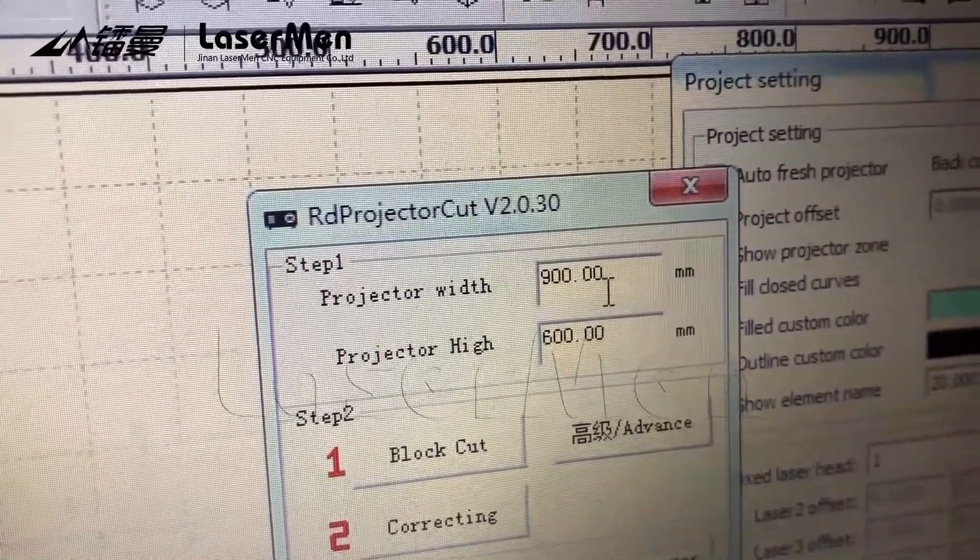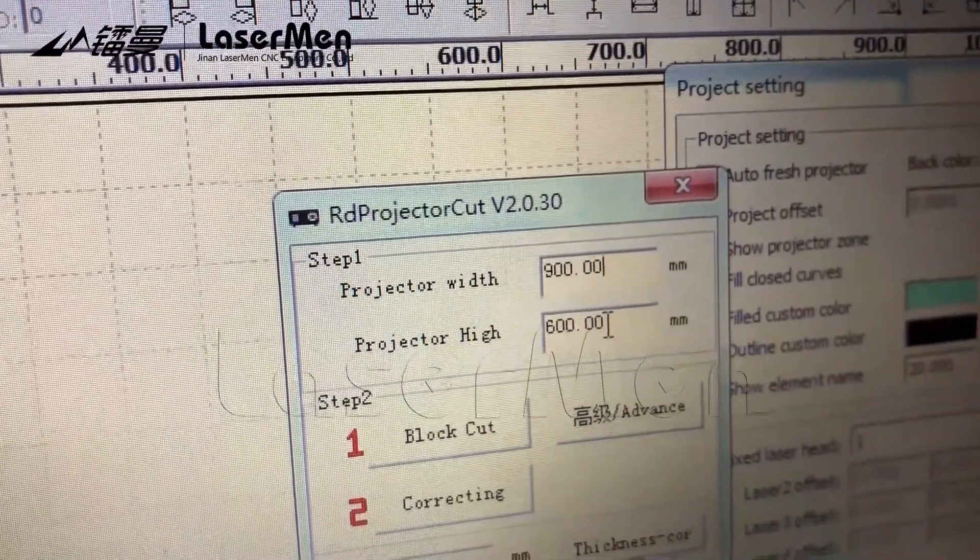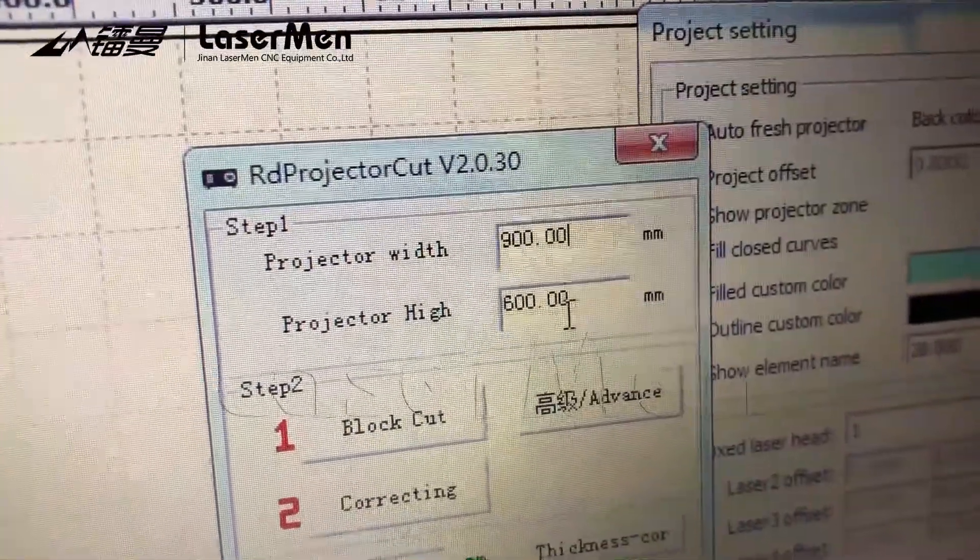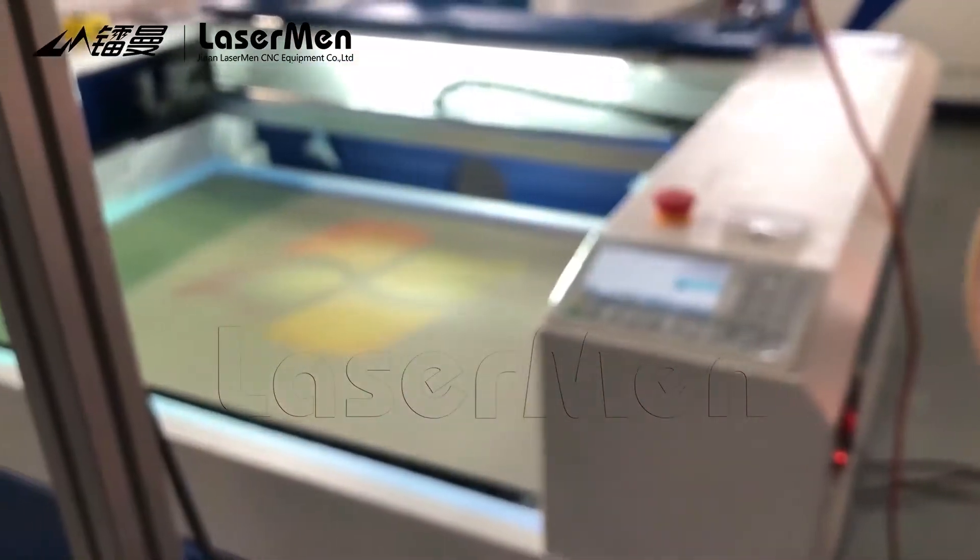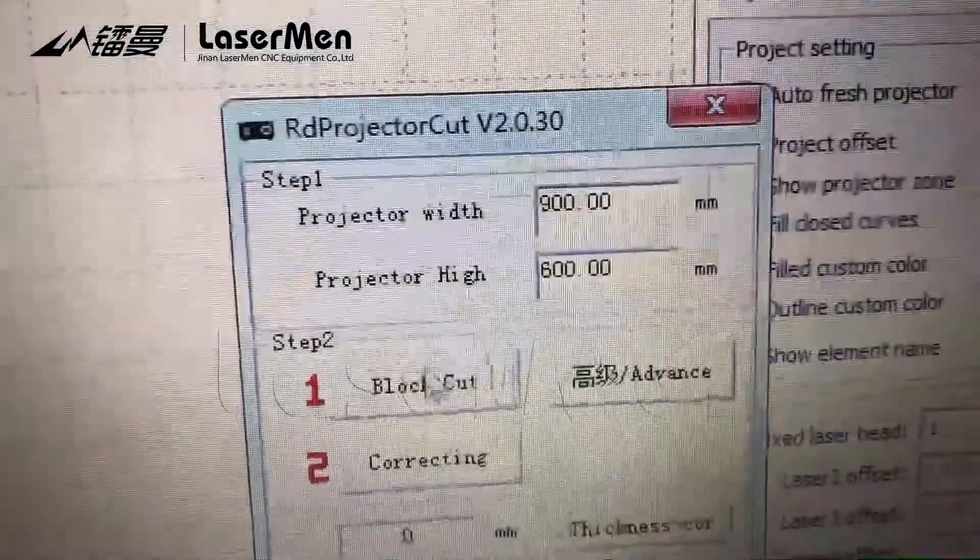Your machine is 1.6 meter, you put 1,600. Projector height, your machine is 1,000 mm. The machine we are using now is 900 by 600, it's a small machine, so we put 900 by 600.